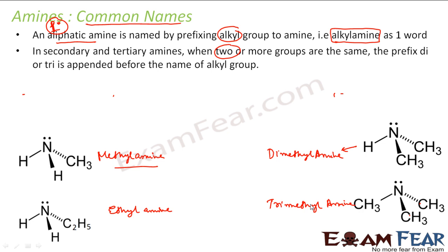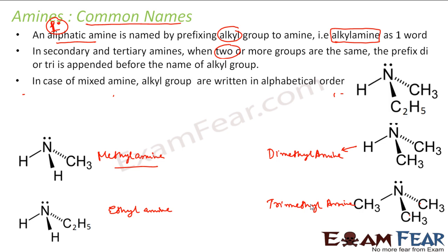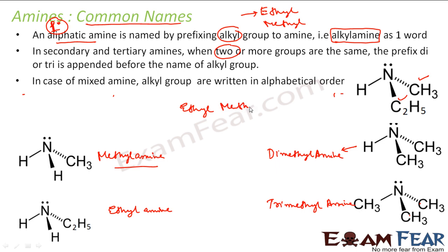If the groups are not the same, it is a mixed amine — not a simple amine. In that case, we follow alphabetical order. For example, here we have ethyl and methyl groups. Starting alphabetically, E comes before M, so it will be ethylmethylamine. That will be the name of this compound.